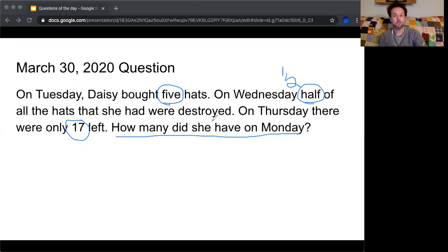One of the boxes I could put around is actually around half. And if she bought a hat, bought five hats, that tells me she is adding to the amount of hats that she has. So I have five, I have one half, I'm left with 17.